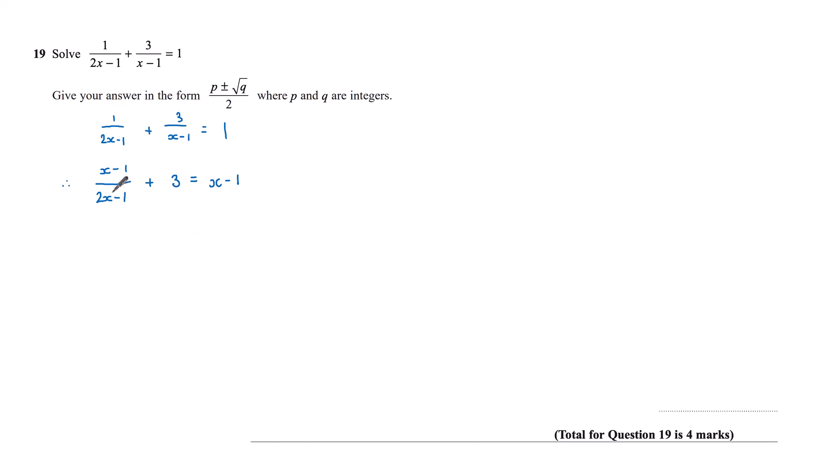Now let's multiply both sides by 2x minus 1. So that's x minus 1 plus 3 lots of 2x minus 1 equals x minus 1 times 2x minus 1.